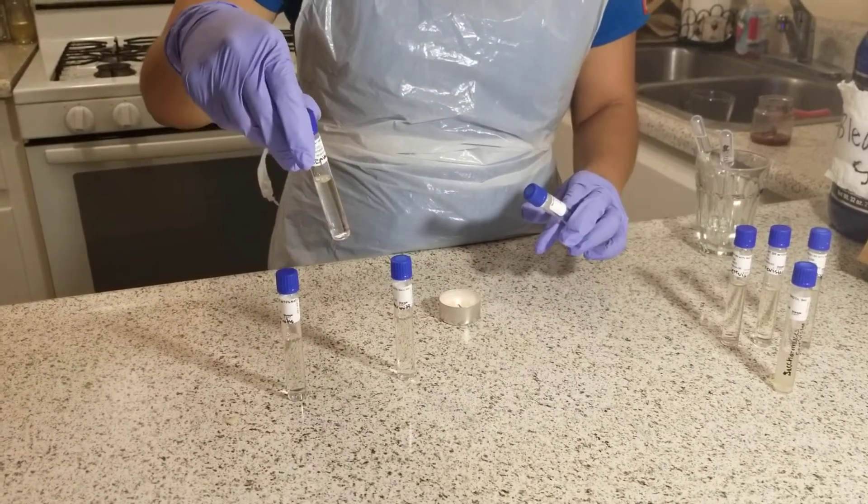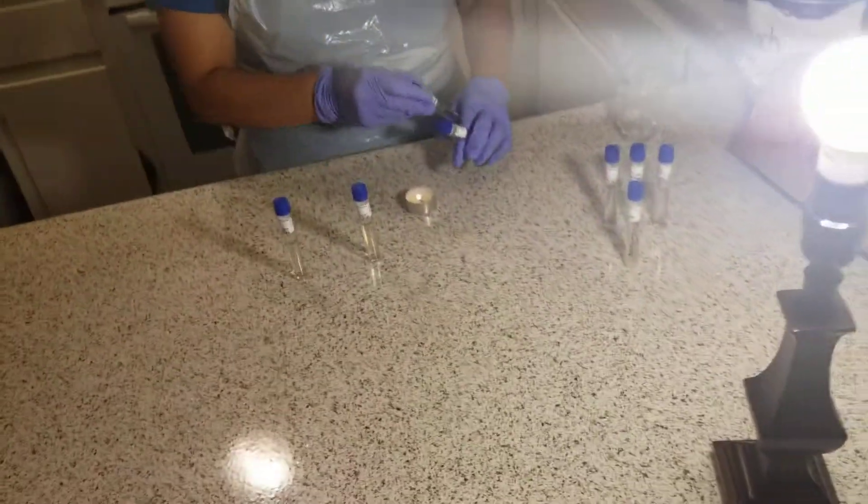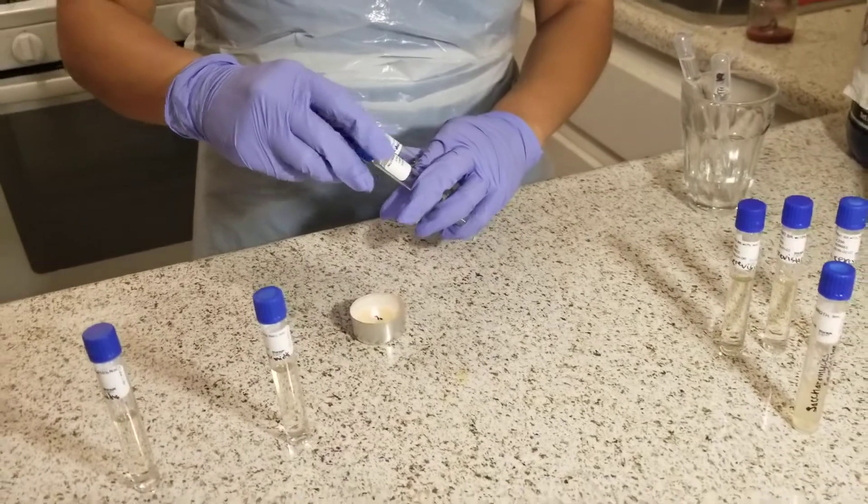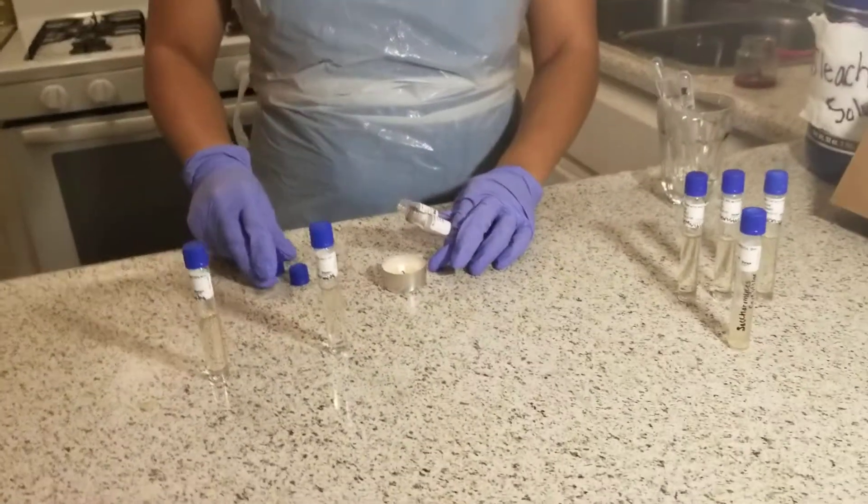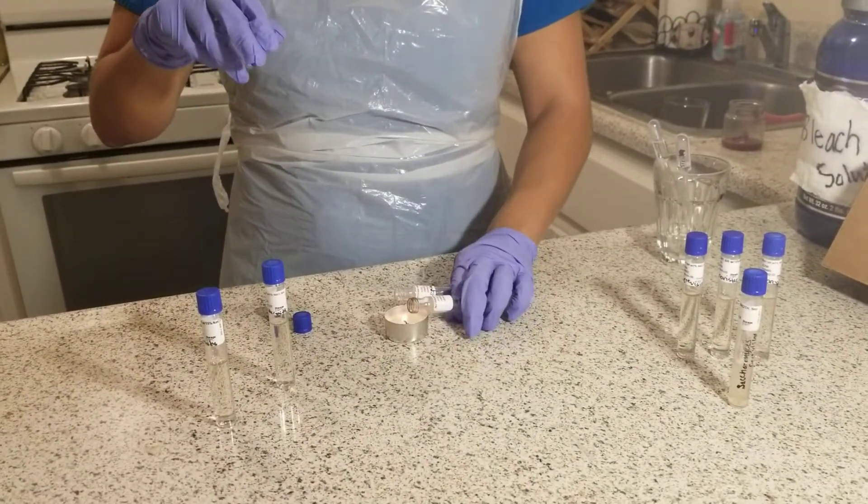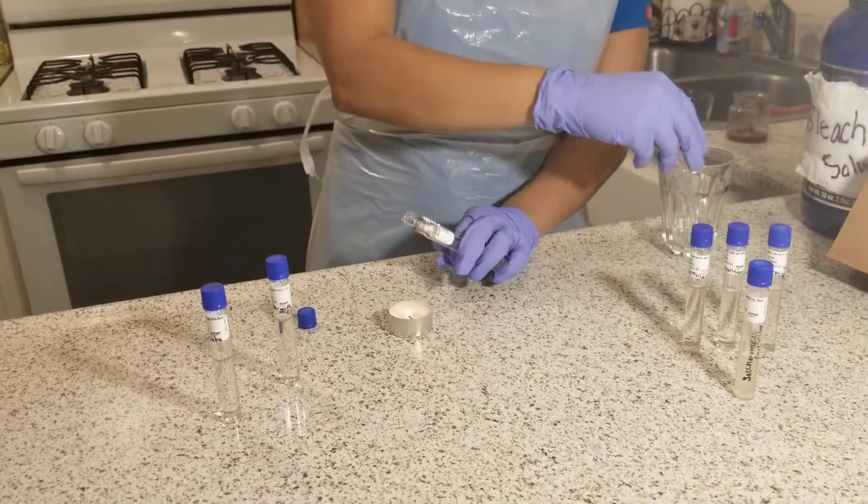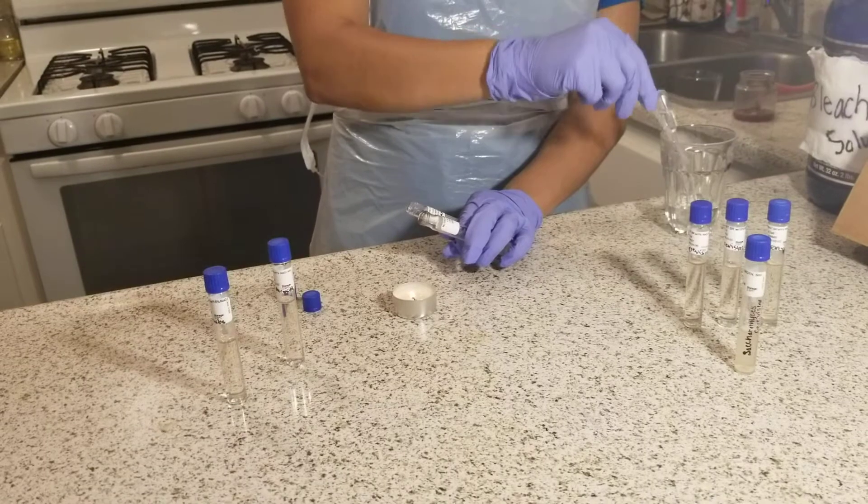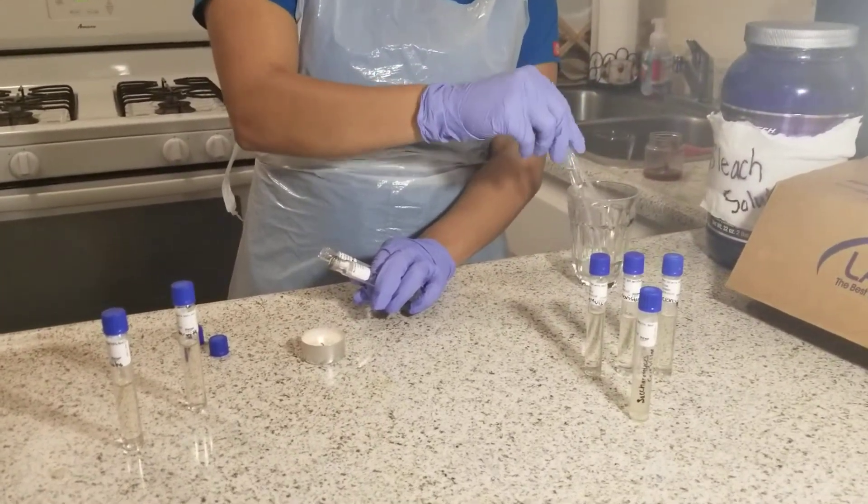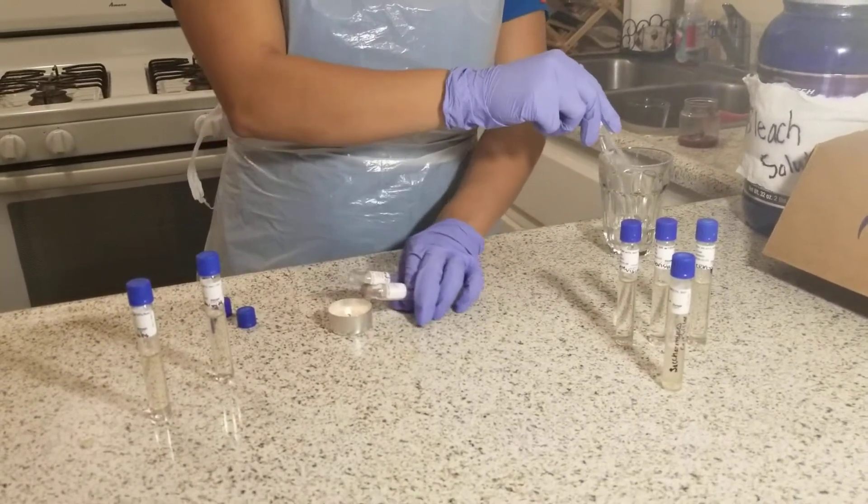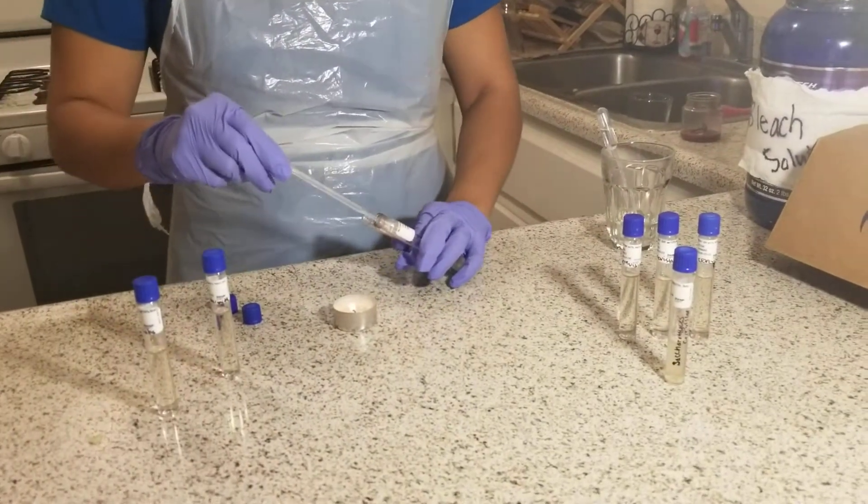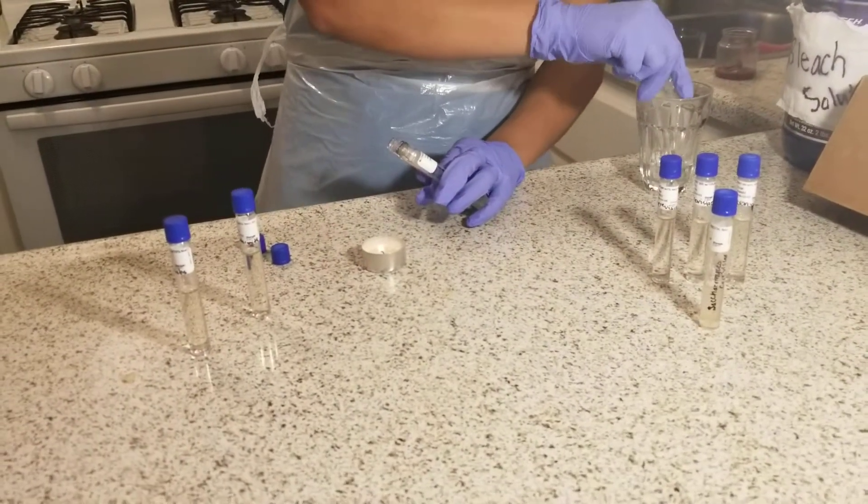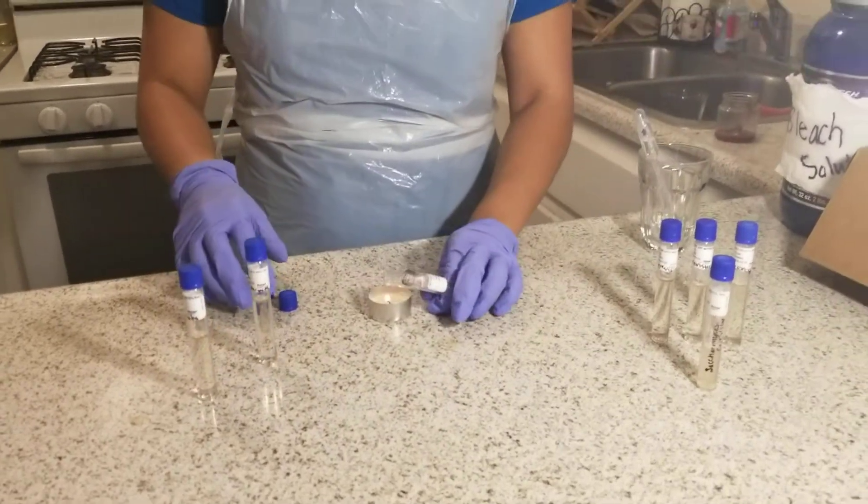Next, I'm going to grab my 5% sodium chloride tube and do the same. Passing both tubes over the flame to sterilize. I'll dry my pipette, then collect 2 drops of the microbe and transfer them into the sodium chloride solution. Sterilize the lids and recap.